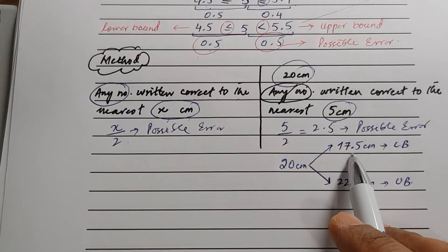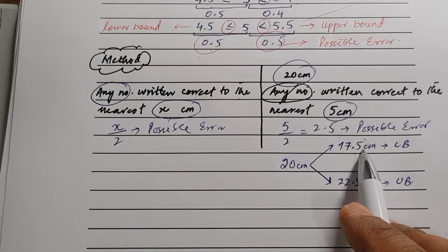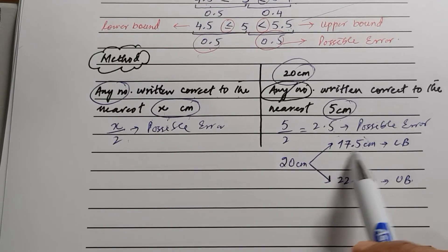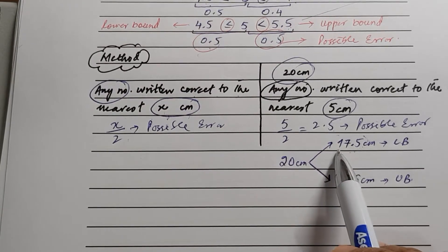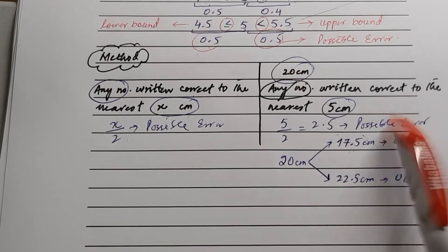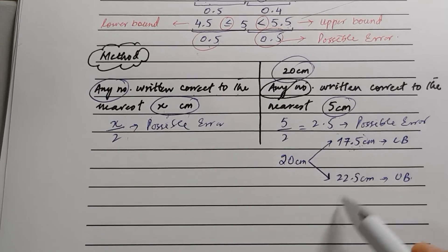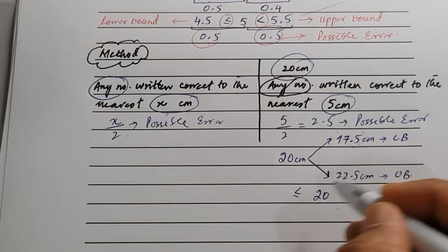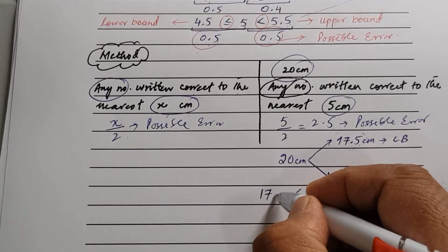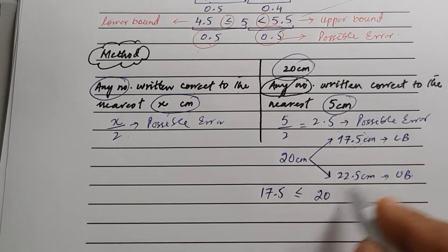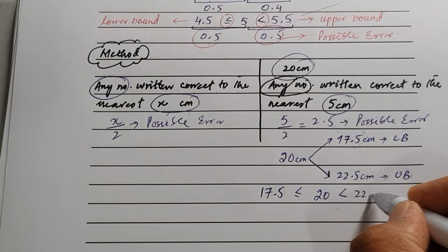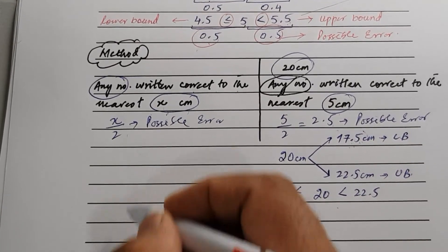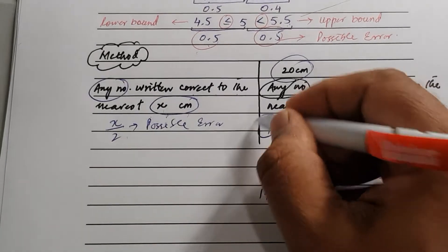You can verify: 17.5 rounded to the nearest 5 gives 20, and 22.5 rounded would give 25 — so remember, the upper bound uses 'less than' not 'equal to.' So 20 is greater than or equal to 17.5, and strictly less than 22.5.